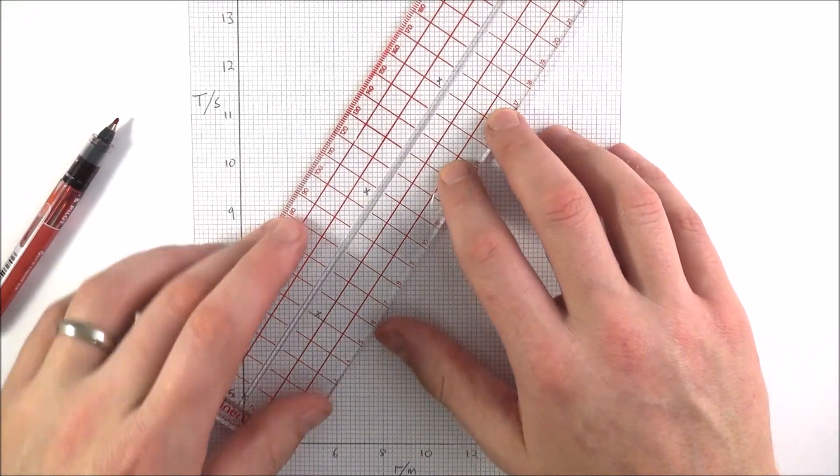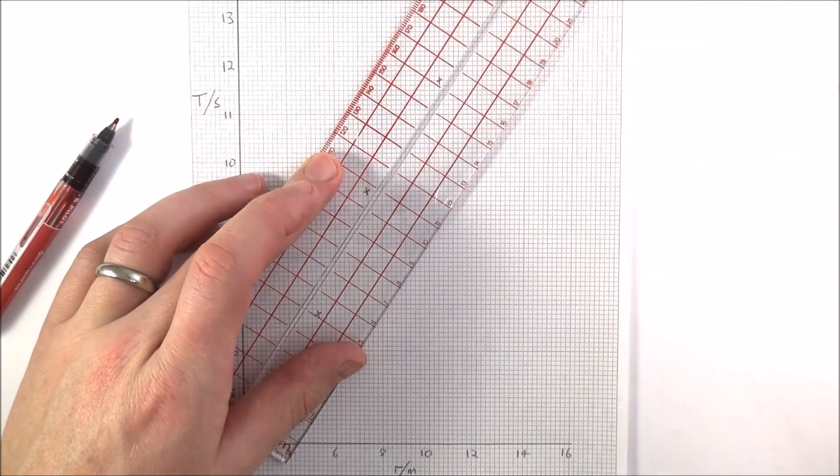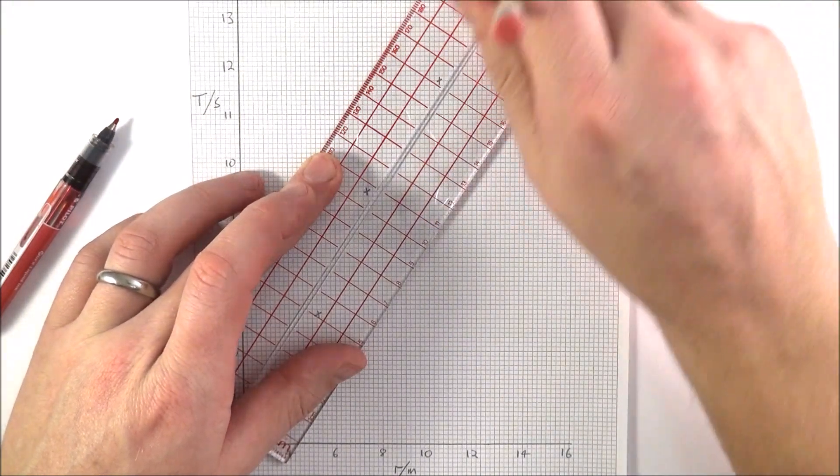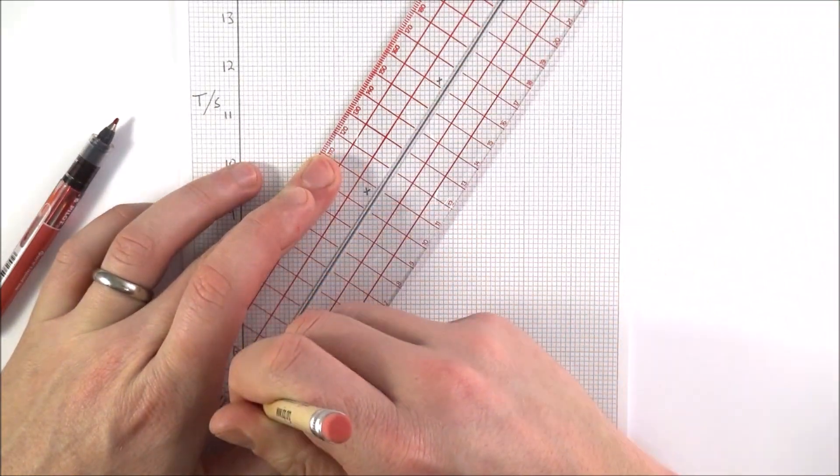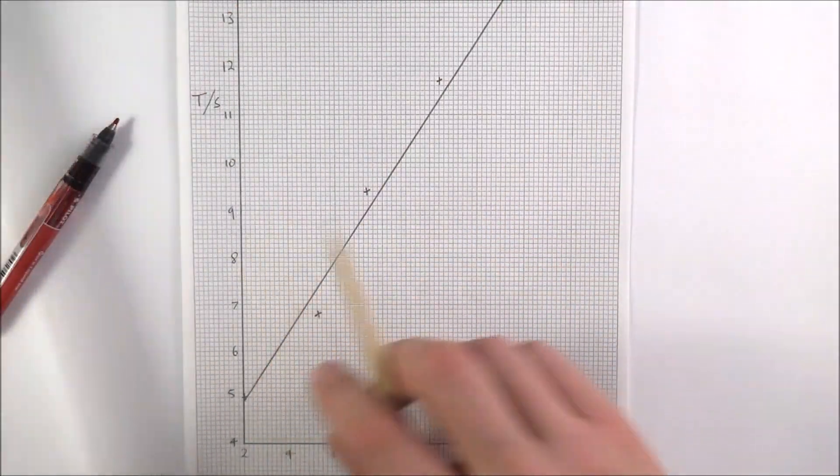And when it comes to drawing in your line of best fit, you want approximately an equal number of points above and below that line of best fit. Now you shouldn't force a line of best fit where it doesn't want to go. If it's not going to go down to the origin, don't force it down there.